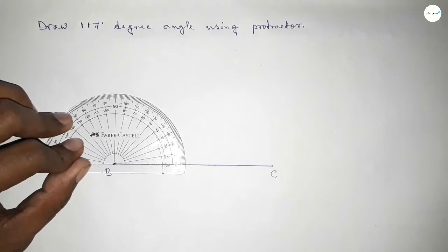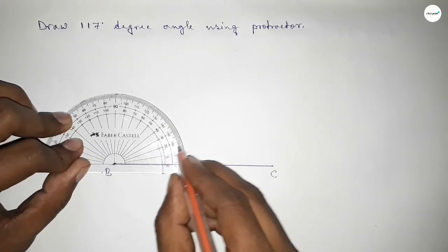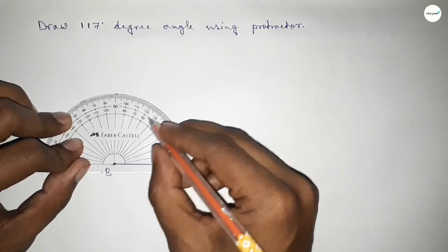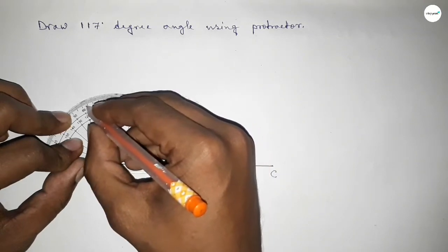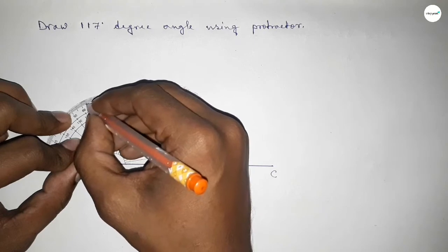So this is starting 0, 10, 20, 30, 40, 50, 60, 70, 80, 90, 100, 110, 115, 116, 117. So this is 117 degrees.